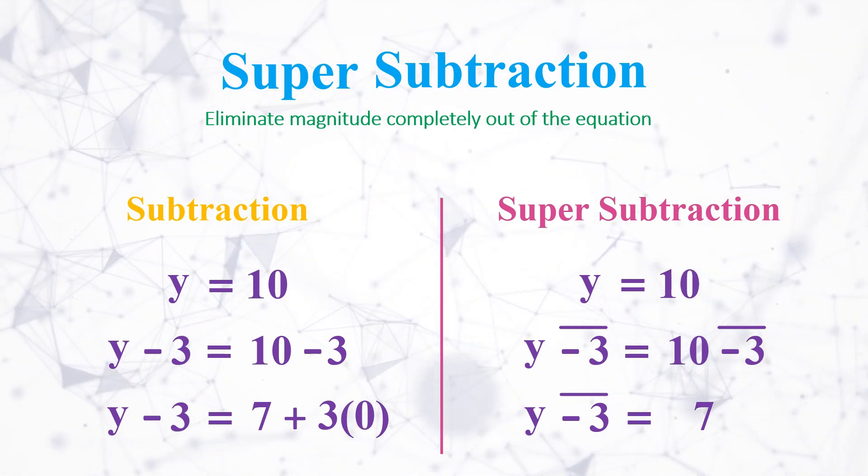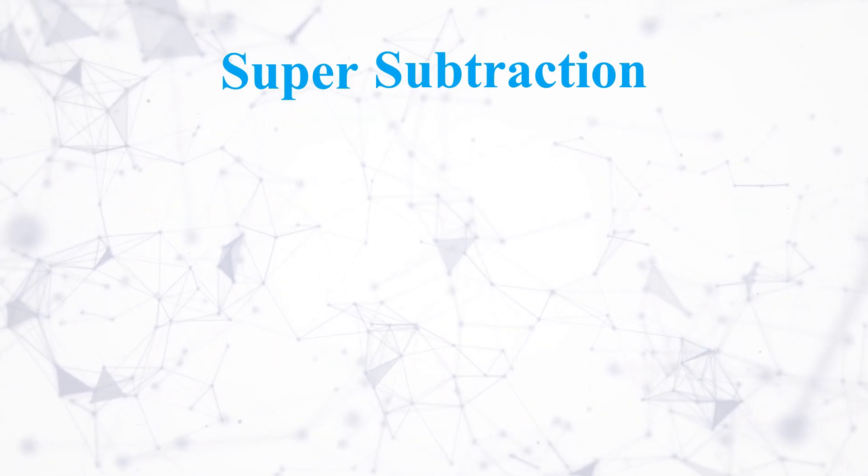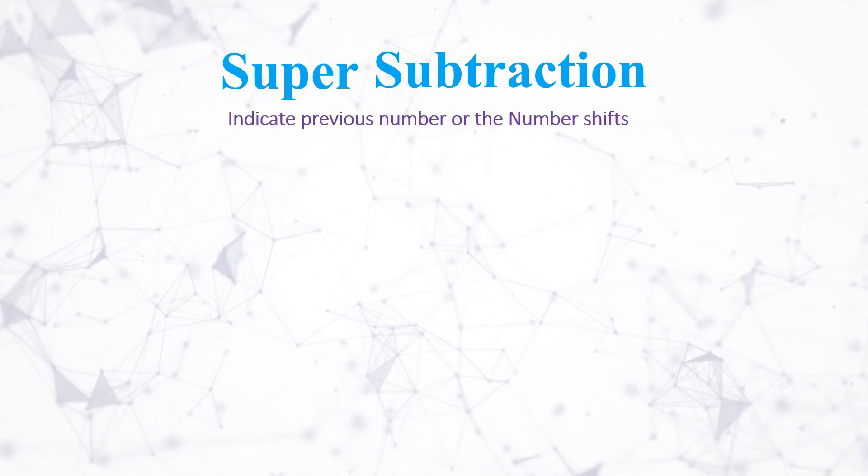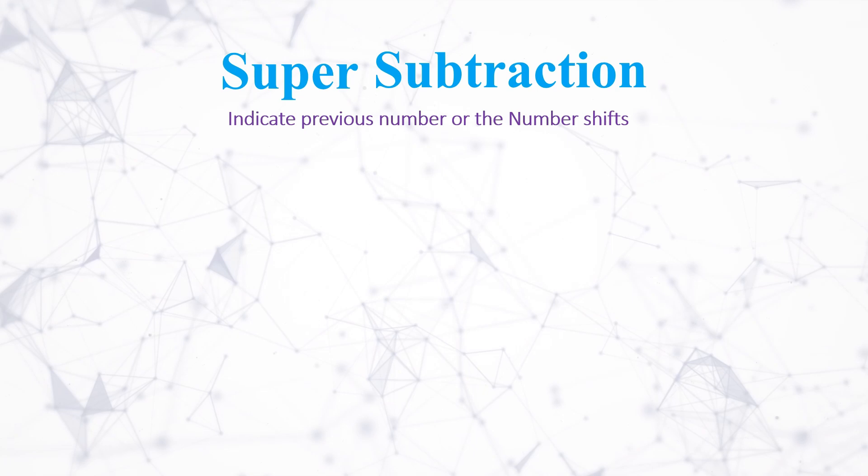Generally, super subtraction should be used to eliminate the magnitude on both the sides completely before undergoing any other operation, and everything will be easy.